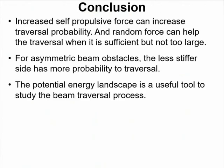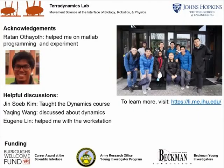Okay, here are my conclusions. The increased self-propulsive force can increase the traversal probability, and random force can help the traversal when it is sufficient but not too large. For asymmetric beam obstacles, the less stiffer side has more probability to traverse. And the potential energy landscape is a useful tool to study the beam traverse process. And thanks to the help of other PhD students in our lab. Thank you for listening.